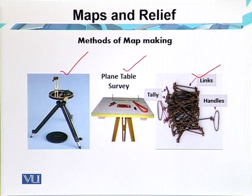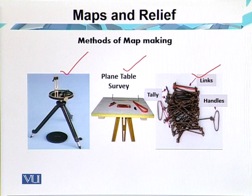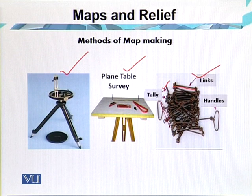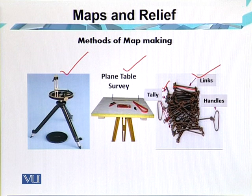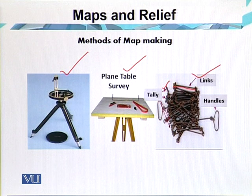In tape and chain survey, there are links of about one foot in length, and all the links are divided into tallies. After every 10 feet there is a tally which shows the distance or measurement of the chain. The second important survey in cadastral mapping is plane table survey, where tools are used for measuring streets and roads. The third is prismatic compass survey, where a compass is used for taking the bearing of areas.